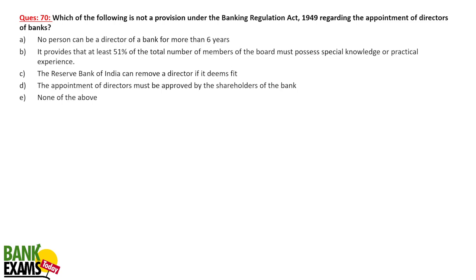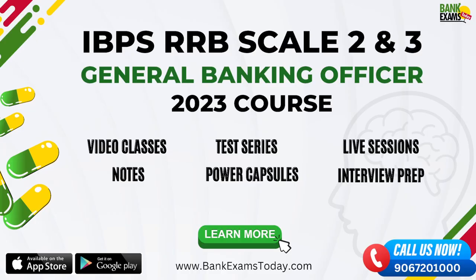Regarding provisions under the Banking Regulation Act 1949 for appointment of bank directors — no person can be a director of a bank for more than eight years (not seven or six as sometimes stated). The act provides that at least 51% of the total number of board members must possess special knowledge or practical experience. RBI can remove any director if it deems fit. The appointment of directors must be approved by shareholders. The first option (seven-year limit) is false — A is the correct answer.